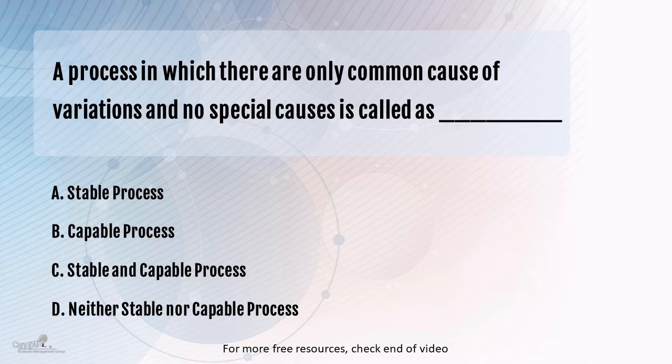A stable process is something which when you plot a control chart you don't have any out of control data points, which means we have 100% no assignable cause that we can spot in the data.